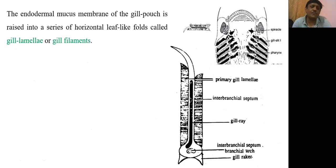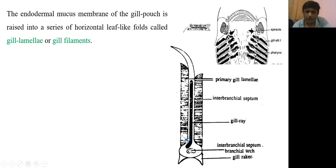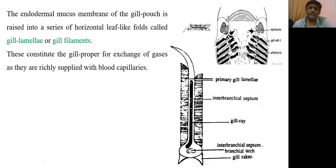The endodermal mucous membrane of the gill pouch, present on the lateral side of the septum, is raised into a series of horizontal leaf-like folds called gill lamellae or gill filaments. These constitute the gill proper — the actual surfaces where exchange of gas takes place — as these gills are richly supplied with blood capillaries.